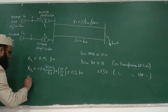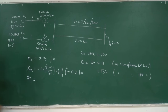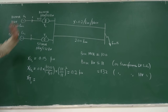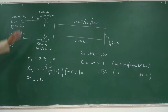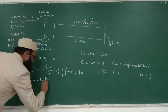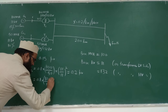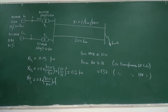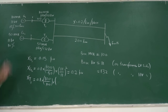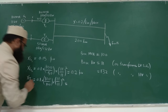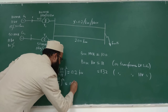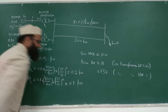Now evaluate the reactances of the two transformers. For T1: X_T1_new = 0.1 per unit. The MVA and KV values of T1 match the base values, so the reactance remains 0.1 per unit. For T2: X_T2_old = 8% = 0.08. Applying the conversion formula with MVA_new = 100, MVA_old = 50, KV old and new both same, X_T2_new = 0.08 × (100/50) = 0.16 per unit.